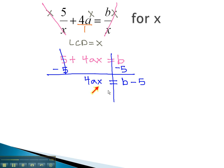Remember, we want the x alone. That means we need to get rid of the factors 4 and a. Right now, the 4 and a are multiplied by x, so we get rid of them by dividing both sides by 4a.